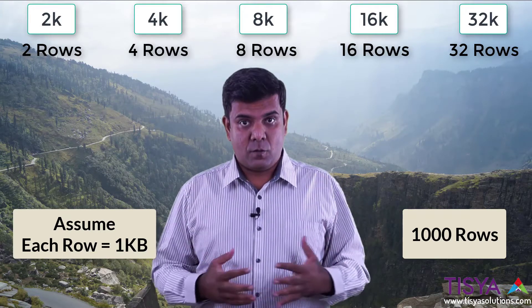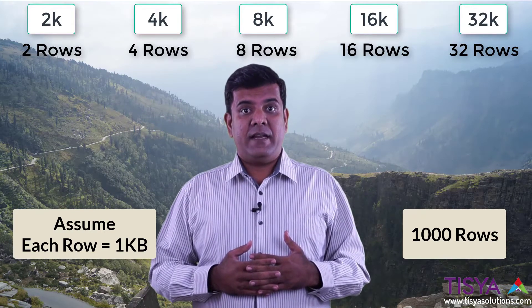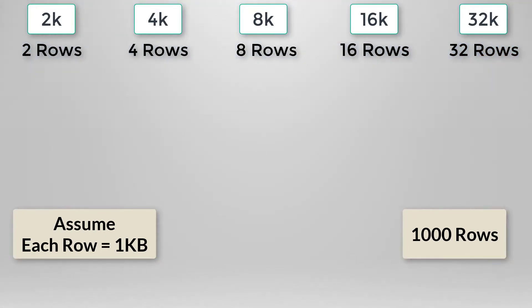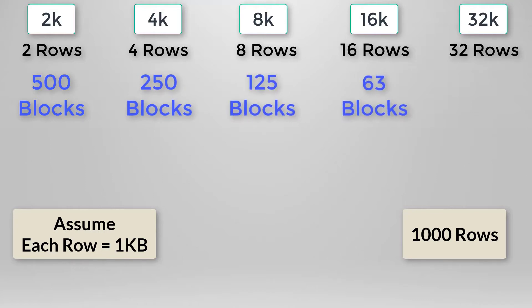Every block from the data file is read into the buffer cache. With a 2K block size and 1,000 rows, you need 500 blocks. With 4K blocks: 250. With 8K blocks: 125. With 16K blocks: 62. And with 32K blocks: just around 32 blocks — that's what you end up with in your table.